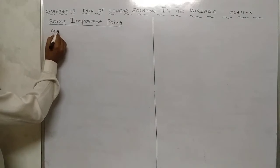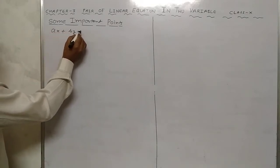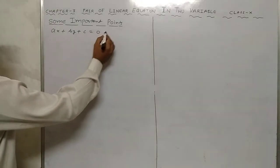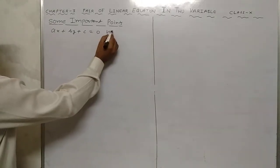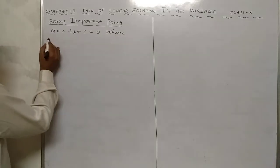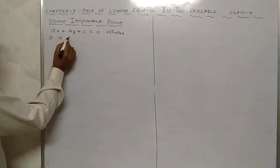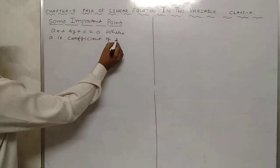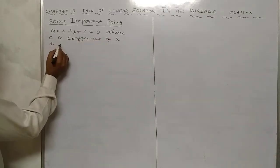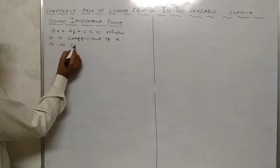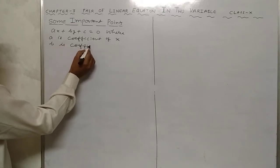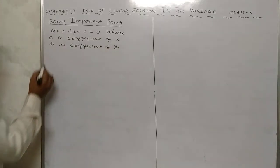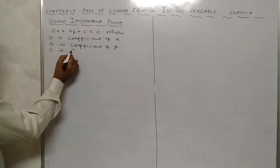The standard form of a linear equation is given by ax plus by plus c equals to 0, where a is the coefficient of x, b is the coefficient of y, and c is the constant term.